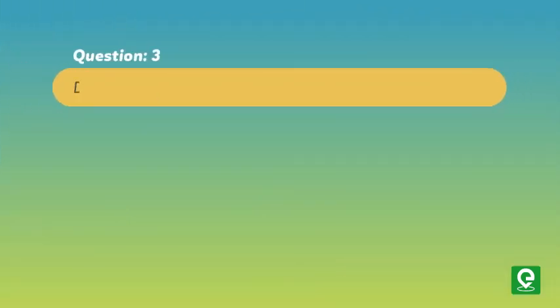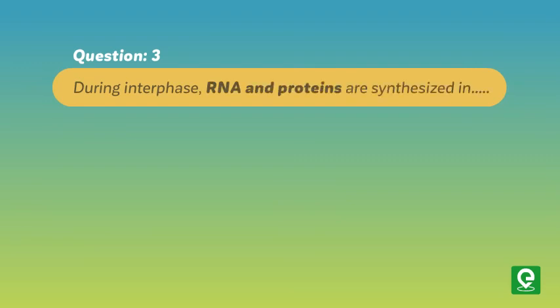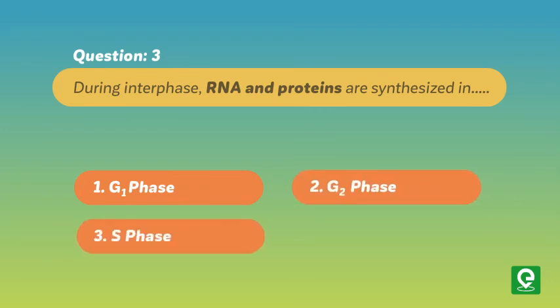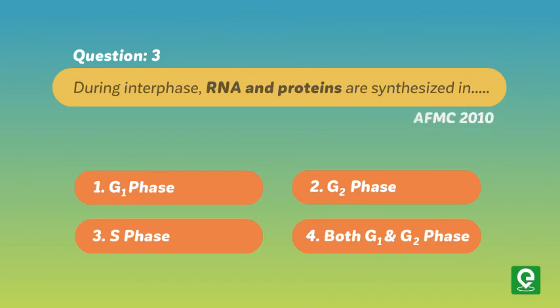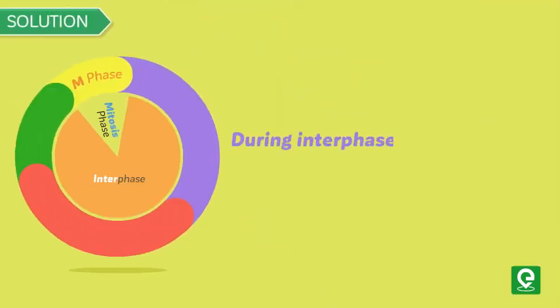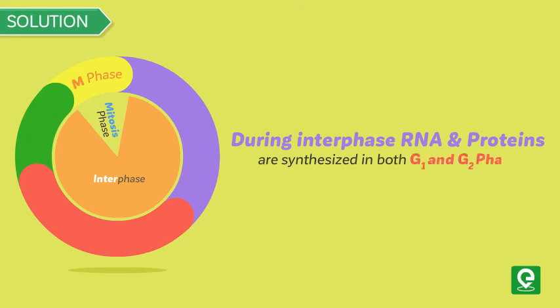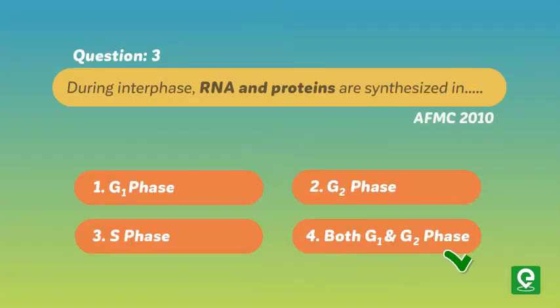Question 3: During interphase, RNA and proteins are synthesized in: 1. G1 phase, 2. G2 phase, 3. S phase, 4. Both G1 and G2 phase. This question was asked in AFMC 2010. Solution: During interphase, RNA and proteins are synthesized in both G1 and G2 phase. Hence option 4 is correct.